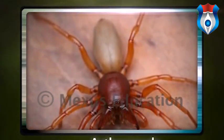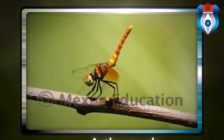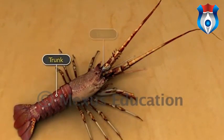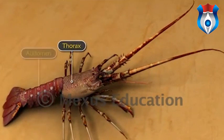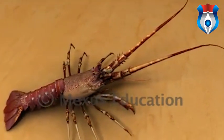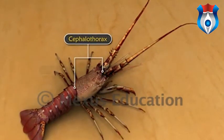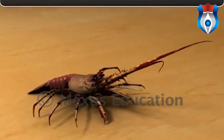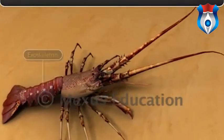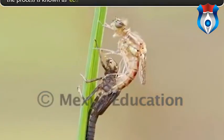Arthropods occur in all habitats almost everywhere in the world. They are bilaterally symmetrical, segmented animals. The body of arthropods is divided into a head and a trunk; the trunk may be divided into a thorax and an abdomen, as found in insects. In some animals such as crabs, the thorax fuses with the head, dividing the body into the cephalothorax and the abdomen. The body of arthropods is covered with an exoskeleton made of chitin, which is very hard.